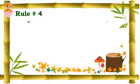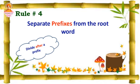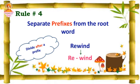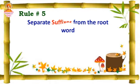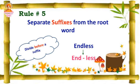Rule number four: separate the prefix from the root word — that is, divide after a prefix. Example: rewind — re is a prefix, so we separate after the prefix as re-wind. Rule number five: separate the suffix from the root word — that is, divide before a suffix. Example: endless — less is the suffix, so we separate before it as end-less.